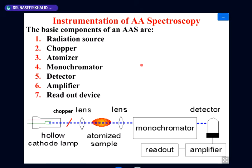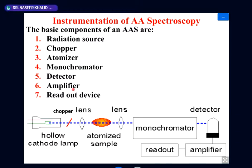These are the slides we were discussing. The basic components of the atomic absorption spectrometer are: radiation source, chopper, atomizer, monochromator, detector, amplifier, and the readout.